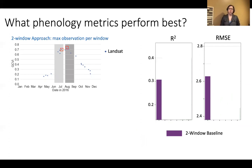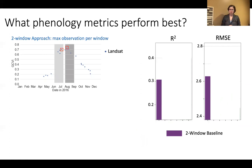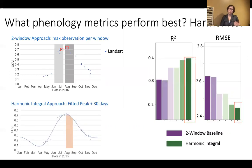We used this data set to look at how to do satellite yield estimation most effectively. One question was which phenology metrics perform best. Traditionally SCIM used a two-window approach taking the maximum observation for an early and late season crop window. That performed with about 0.3 R-squared. We found that using a harmonic regression to smooth the time series and then deriving the integral for the shaded region helped improve accuracy the most.